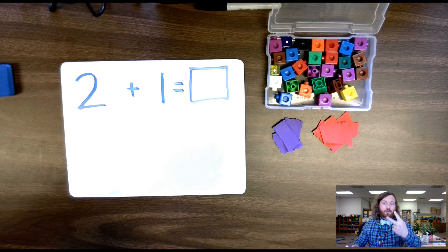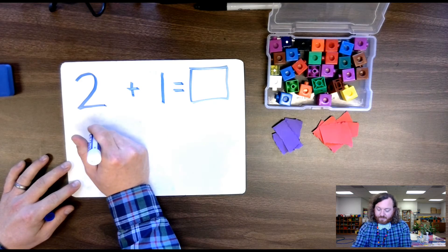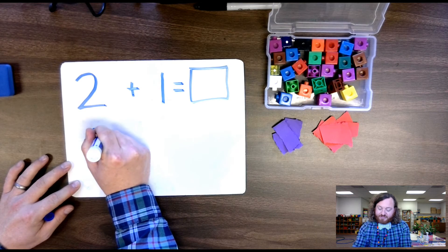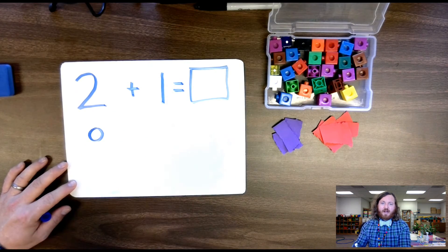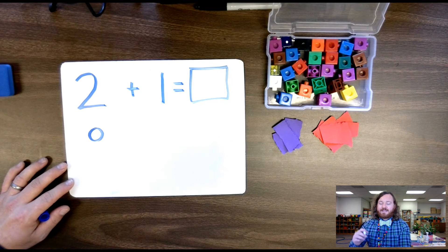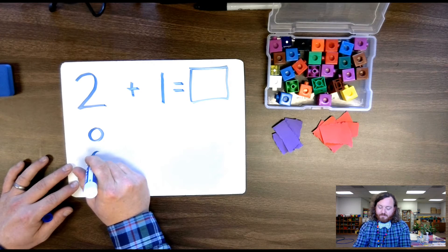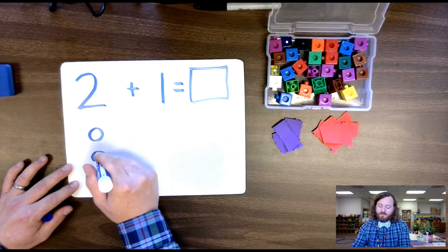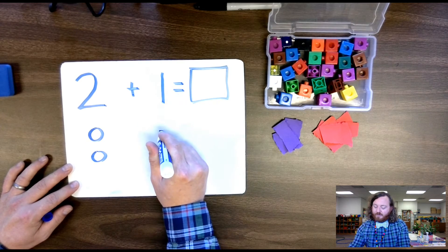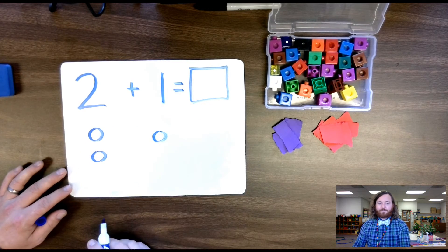So we have two plus one equals. So underneath the two, I'm going to draw two bubbles. It's important that you draw bubbles and not dots because the dots can get confusing. One, two. And then under the one, I'm going to draw one bubble.